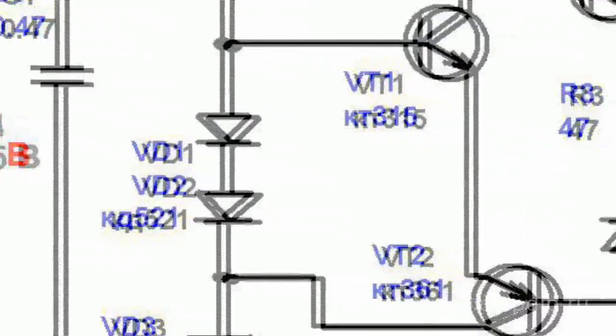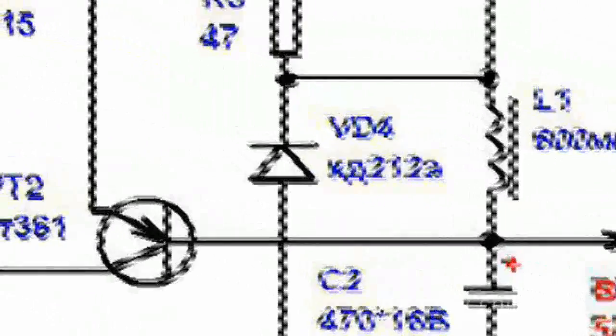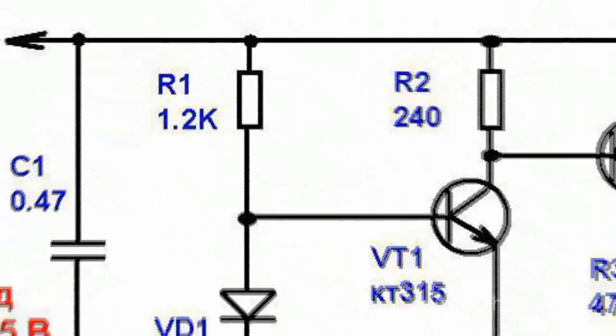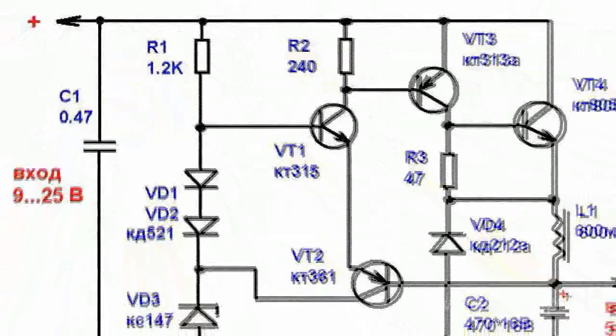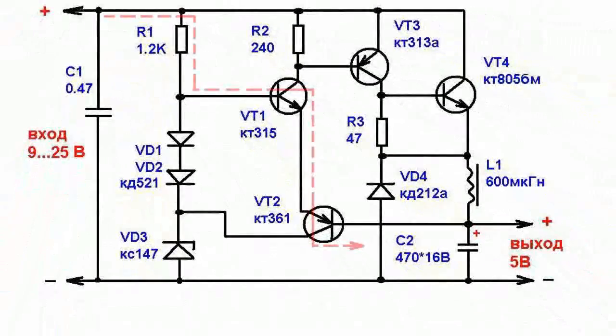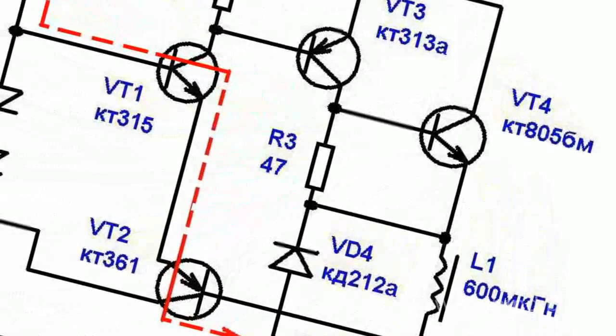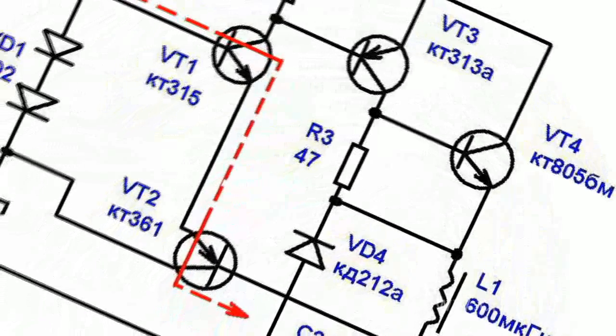When you switch on the power, the voltage on capacitor C2 is equal to zero, and current begins to flow via resistor R1 and the emitter junctions of transistors VT1 and VT2. Further on, the transistors VT1 and VT2, then VT3 and VT4, start to open.